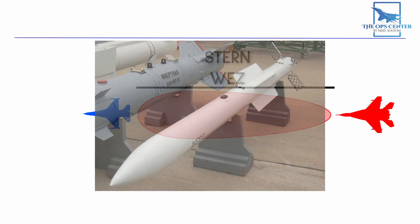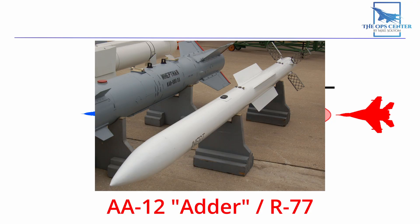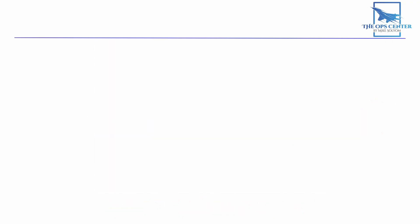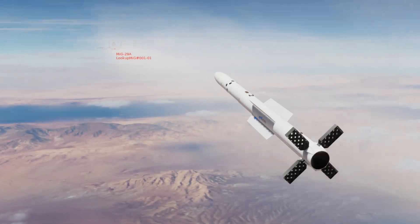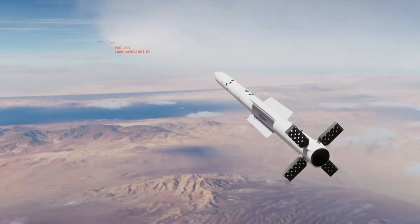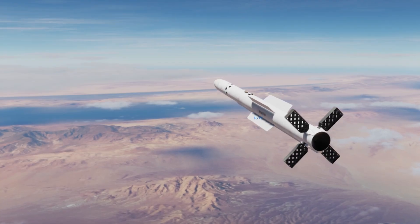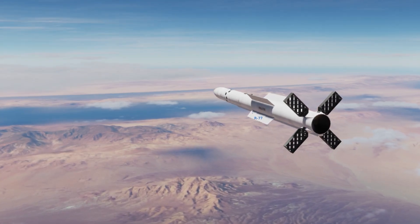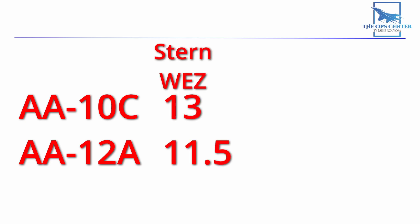Now I also did some testing with the AA-12. This is an active radar homing missile that's the Russian equivalent of the US AMRAAM. Here's what happened at 30,000 feet when I launched at 11.5 miles. You don't get any closer than that, so it's safe to say that this is its stern WEZ. To create a MAR for each of these missiles, we just need to add the range lost from an OUT to each stern WEZ. That gives us these numbers for MAR.